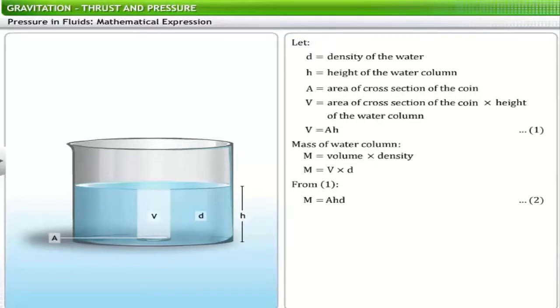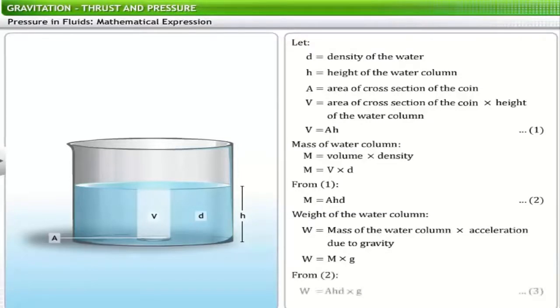As you know, weight of a substance is a product of its mass and the acceleration due to gravity, G. Therefore, weight of the water column, W, is equal to the mass of the water column multiplied by G. Thus, W is equal to M multiplied by G. Substituting equation 2 here, you get equation 3.